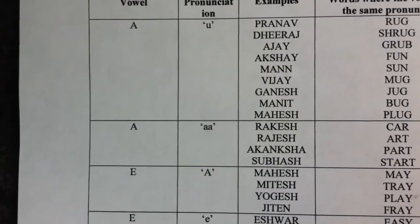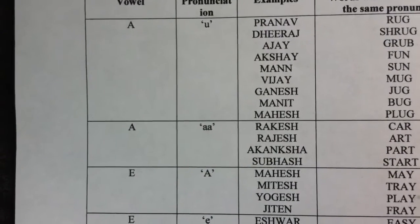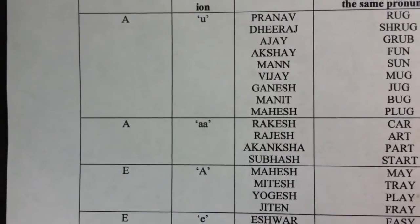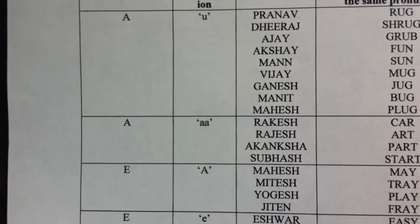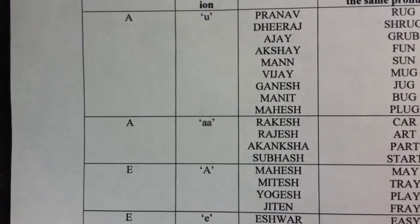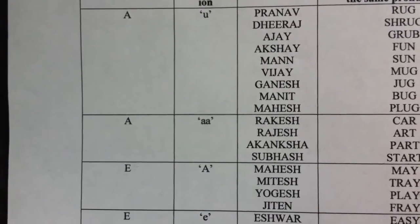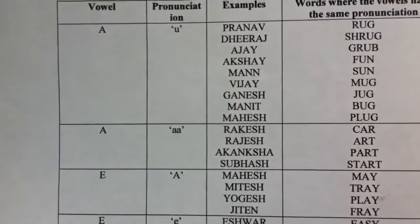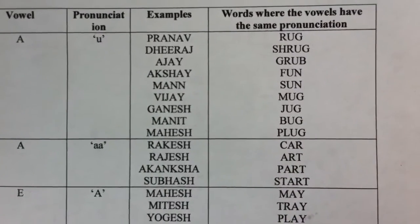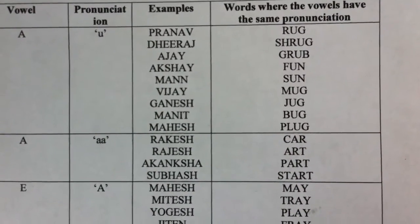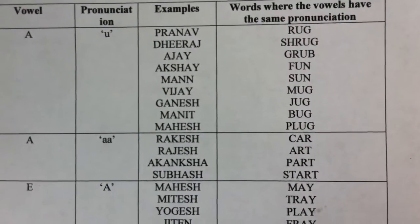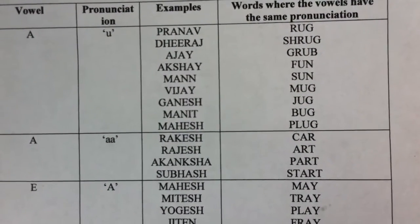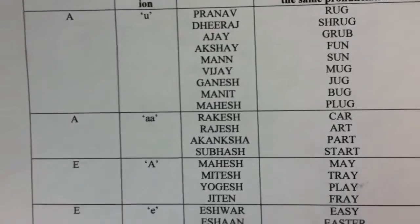Names where A is pronounced as the 'ah' sound would be Rakesh, Rajesh, Akanksha, Subhash, etc. And words from the English dictionary for reference would be: Car, Art, Part, Start, etc.